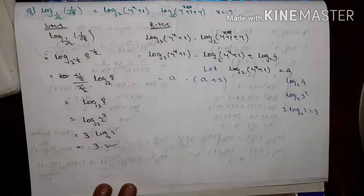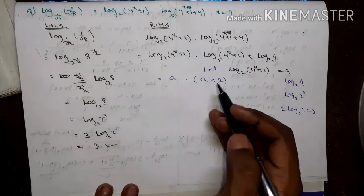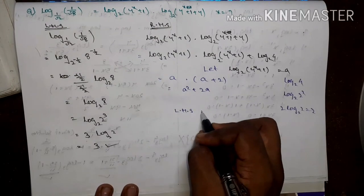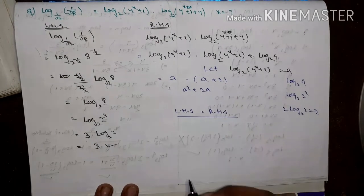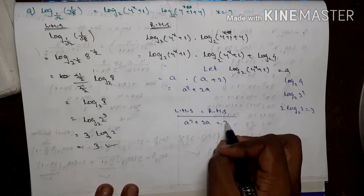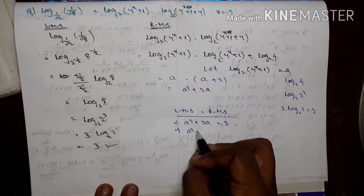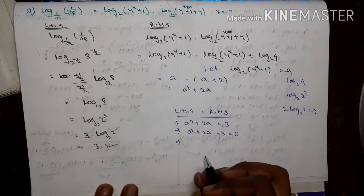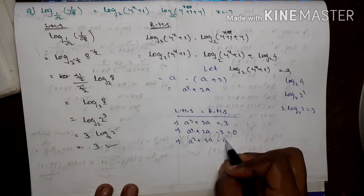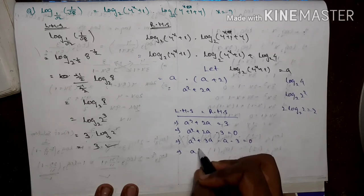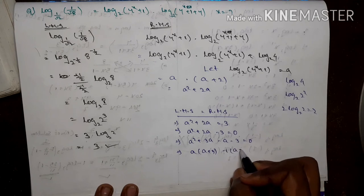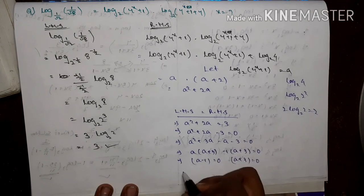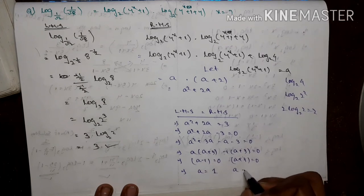Setting LHS equal to RHS: y² plus 2y equals 3, so y² plus 2y minus 3 equals 0. By factorization — multiply is minus 3, addition is 2 — we get (y+3)(y-1) equals 0. Therefore y equals 1 or y equals minus 3.